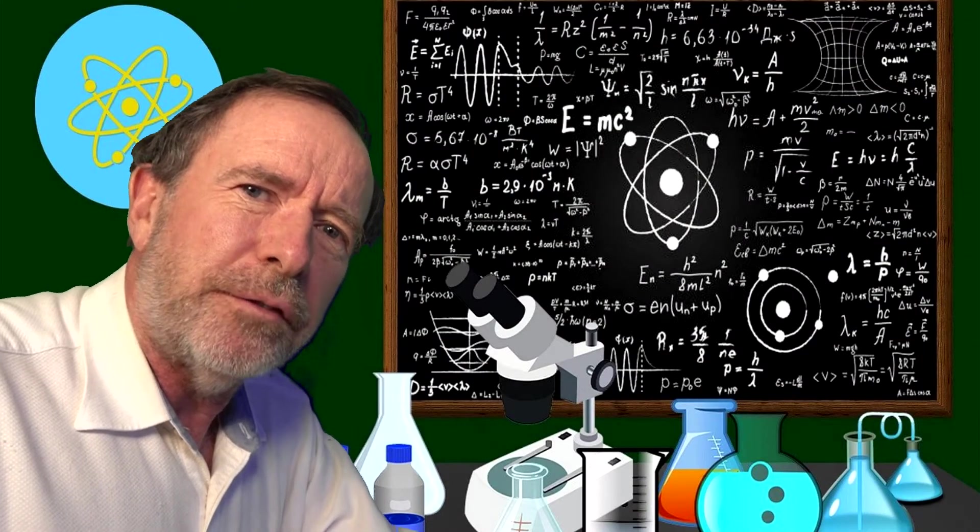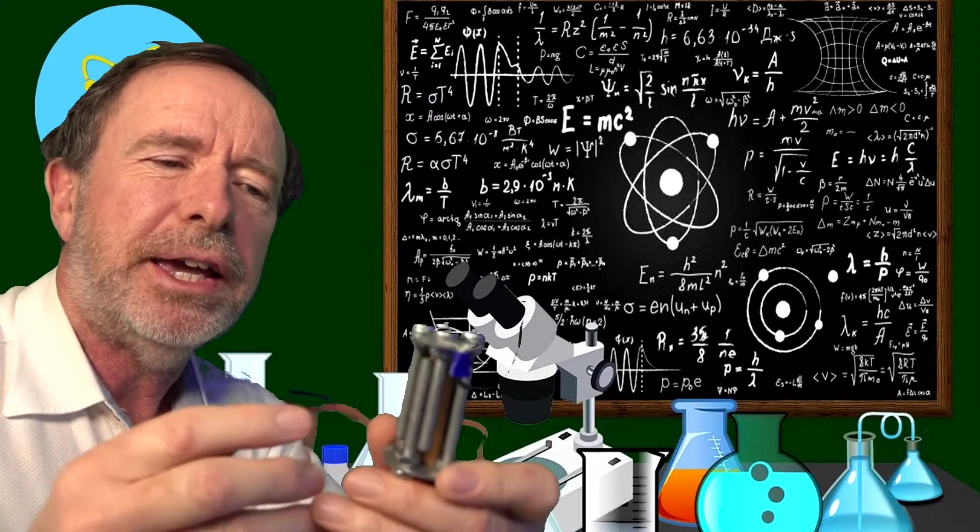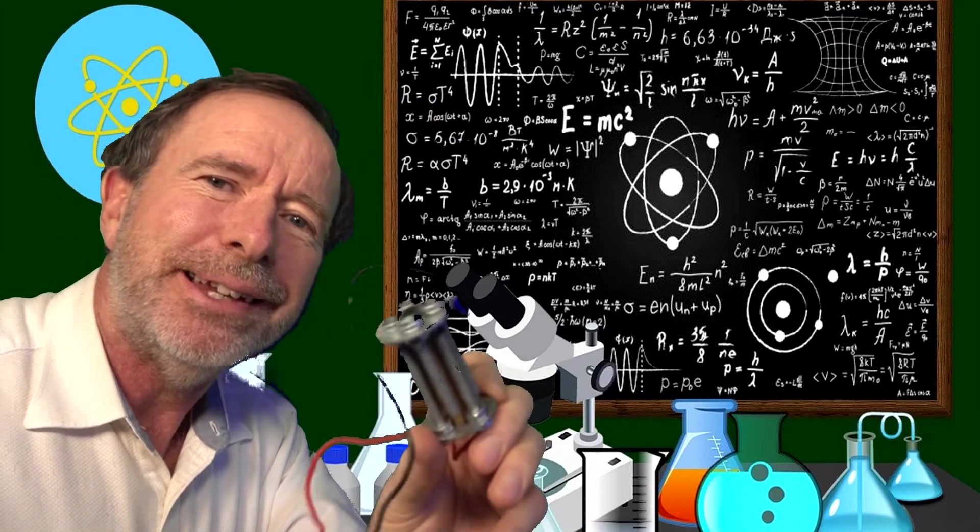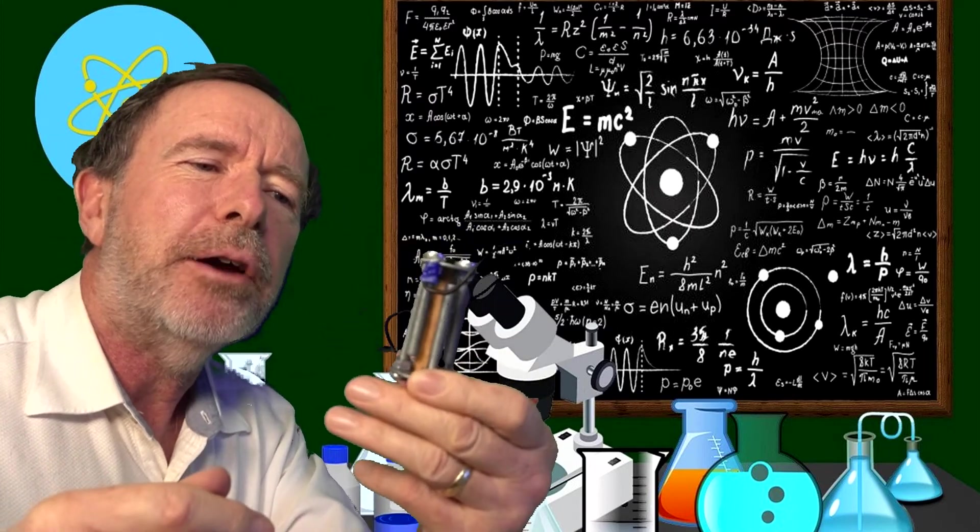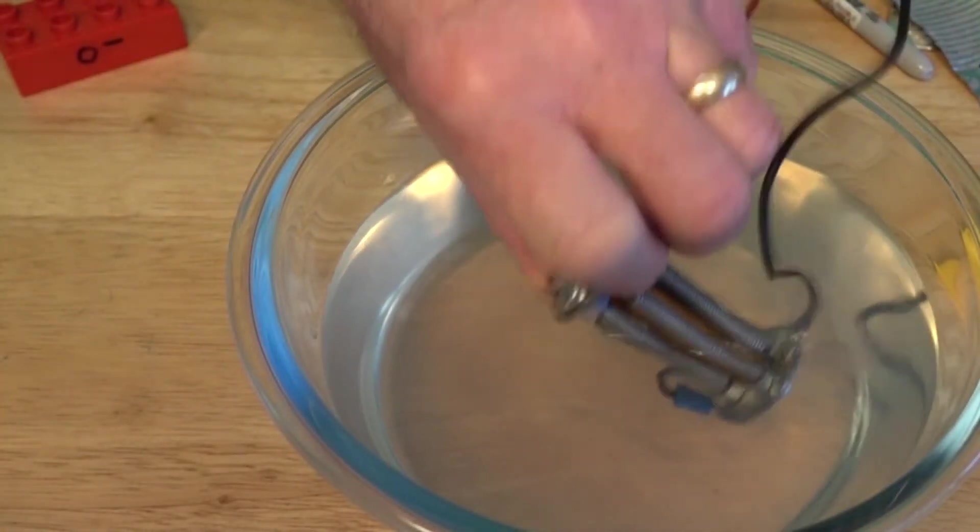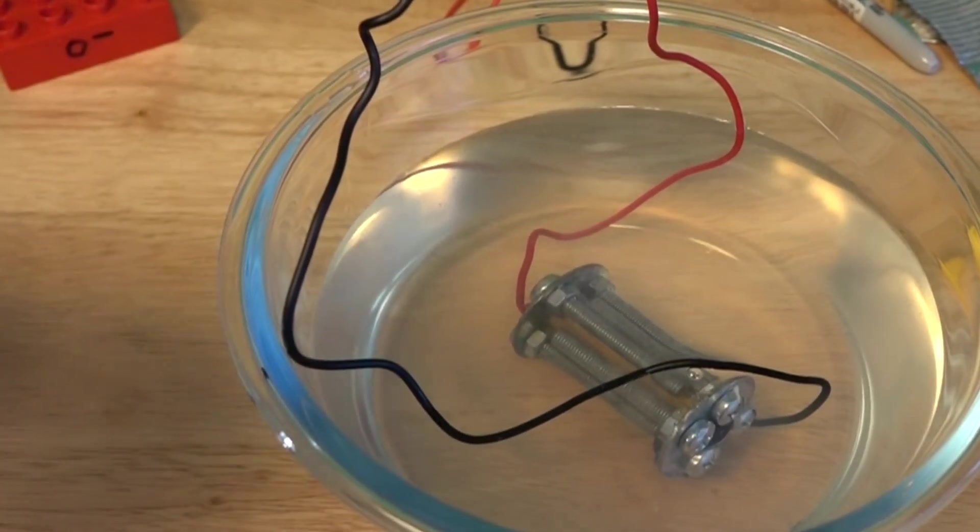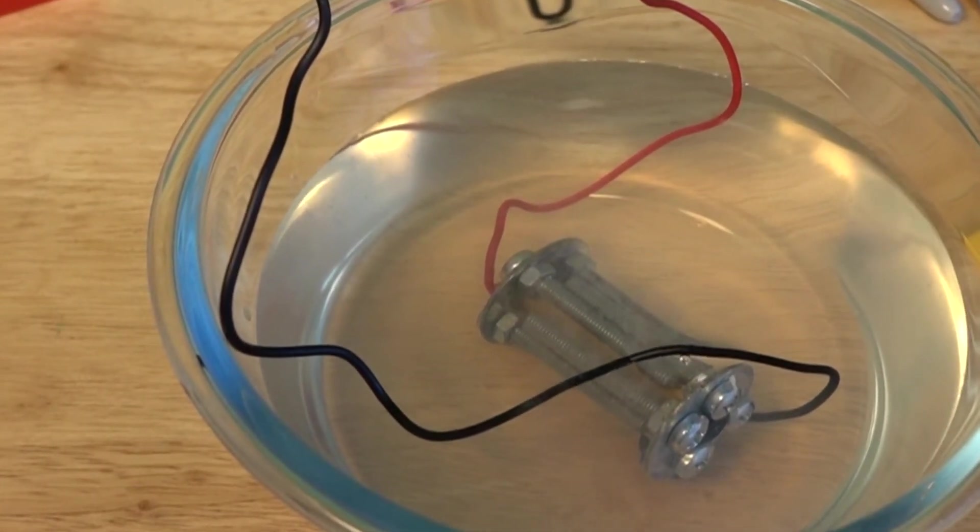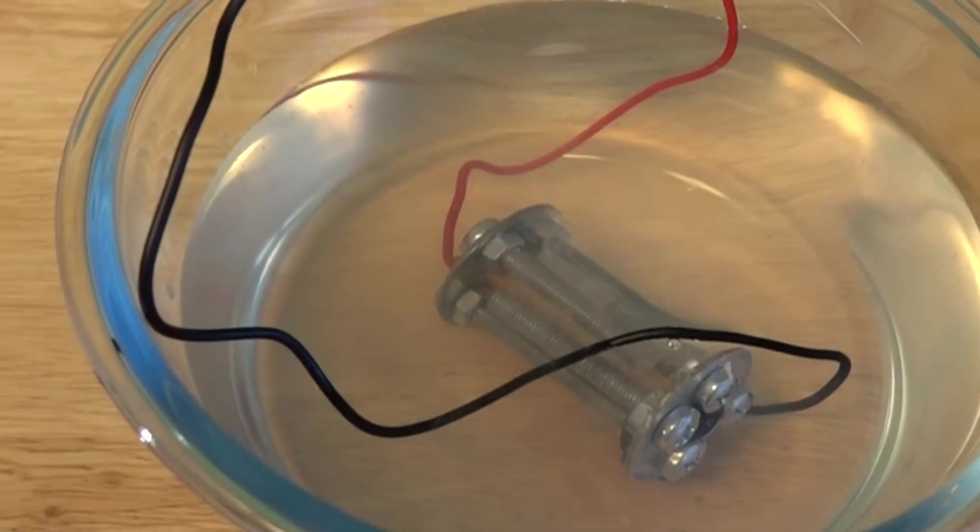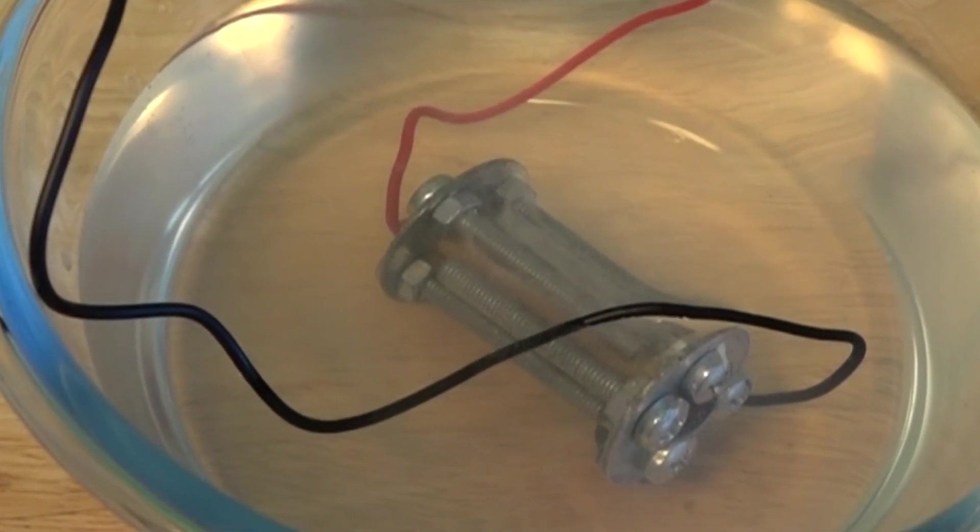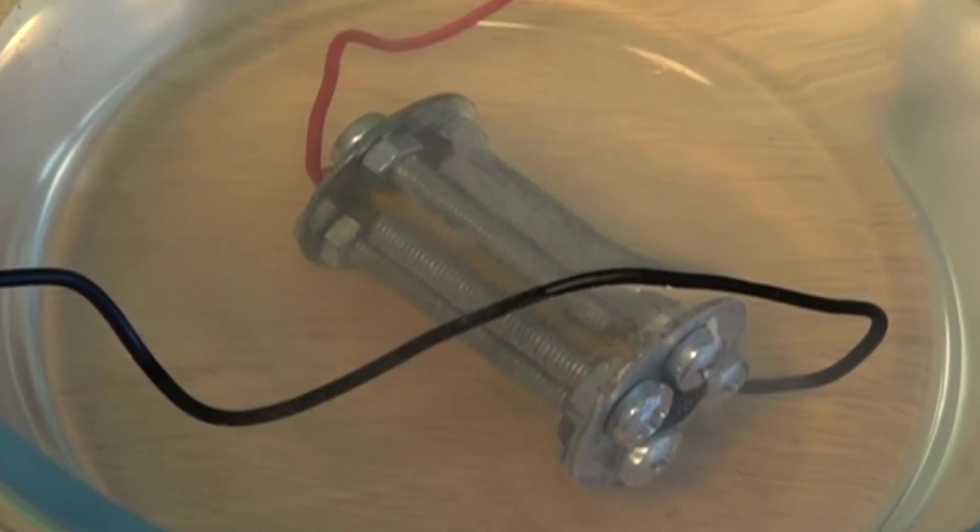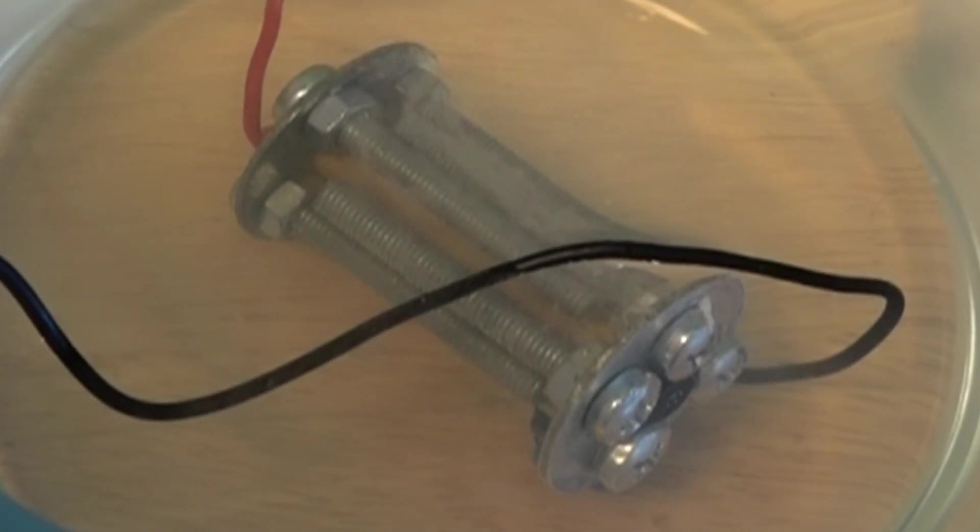Now that wasn't producing an awful lot of gas so what I've produced here is a little cell of my own out of some bolts. So I'll drop him in there and see what he does. Yeah there you see that's producing quite a nice lot more gas in there. Hydrogen oxygen gas bubbling out of the water.